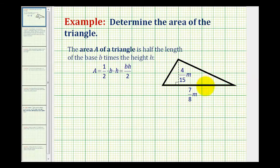We want to determine the area of the given triangle. The formula for the area of a triangle is one-half times base times height, or base times height divided by two.